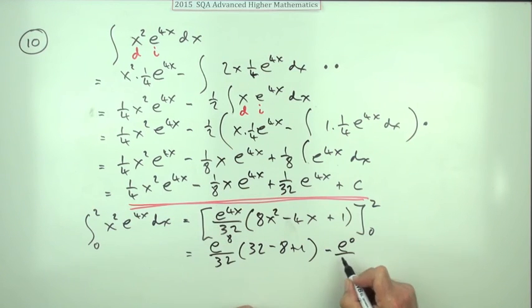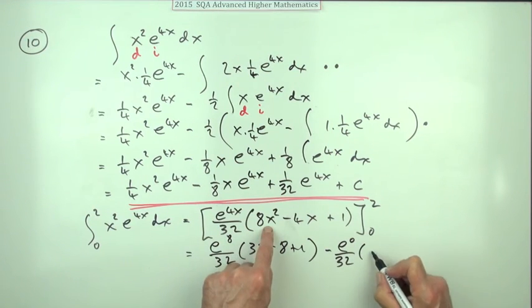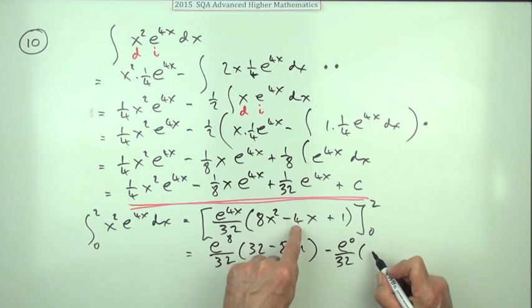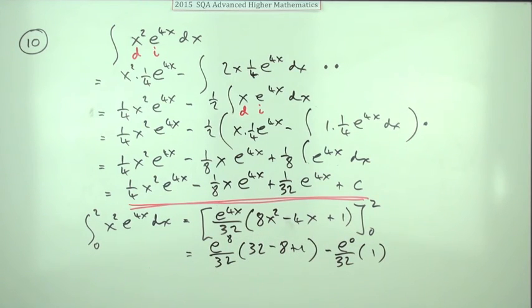And that'll be e to the 0 over 32. Times that'll be 0. That'll be 0. And that'll just be 1. Almost there.